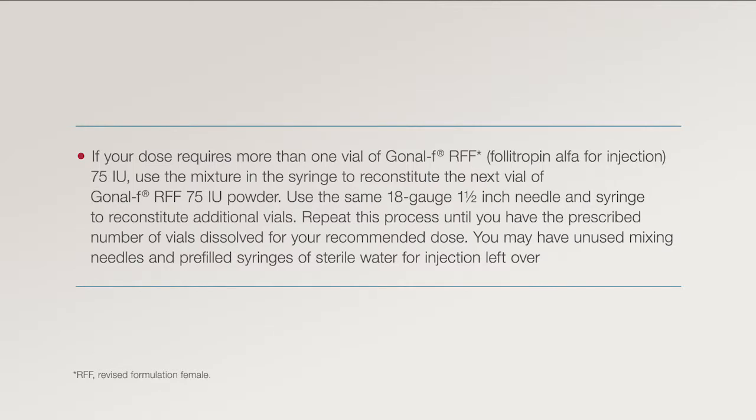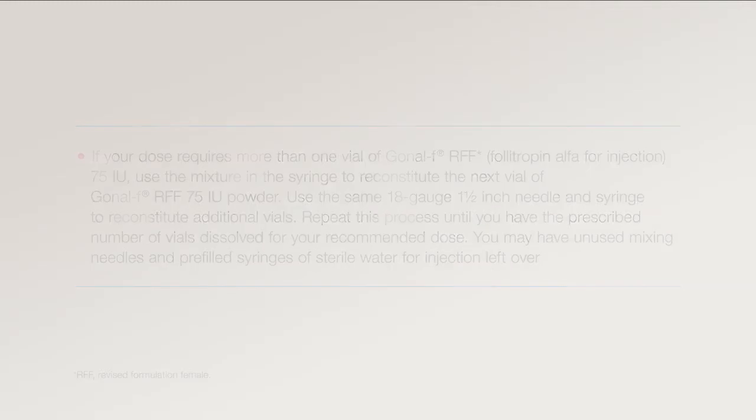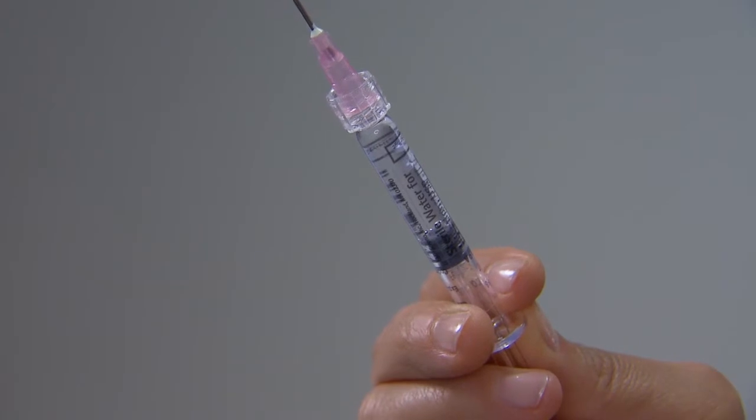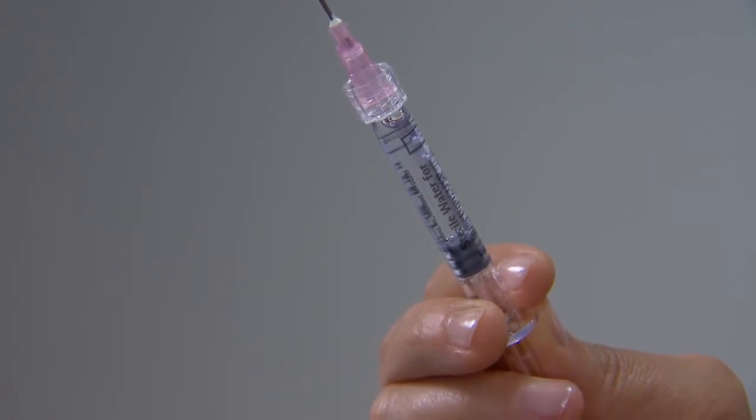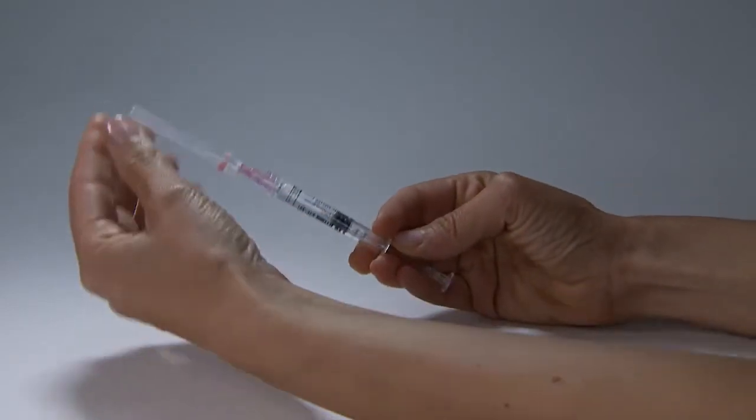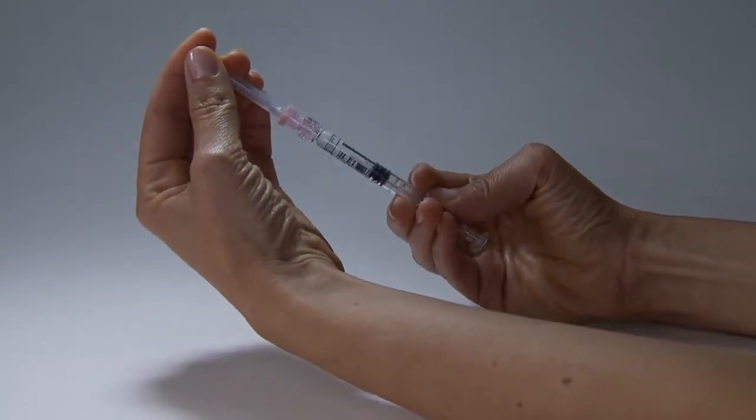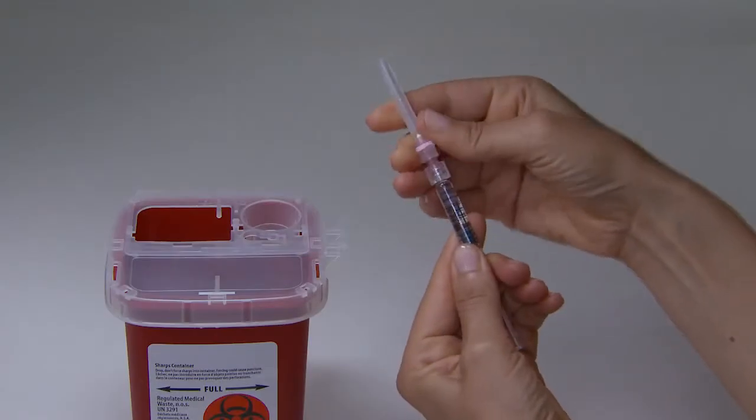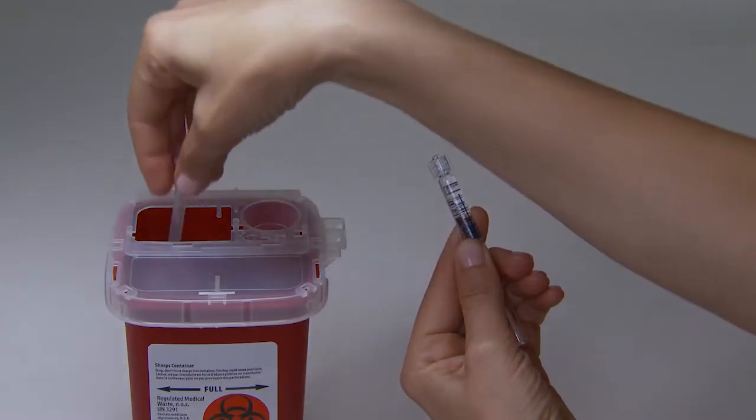You may have unused mixing needles and pre-filled syringes of sterile water for injection left over. Gently move the plunger back to allow for a small air space. Carefully recap the needle. Twist off the mixing needle from the syringe and discard in your sharps container.